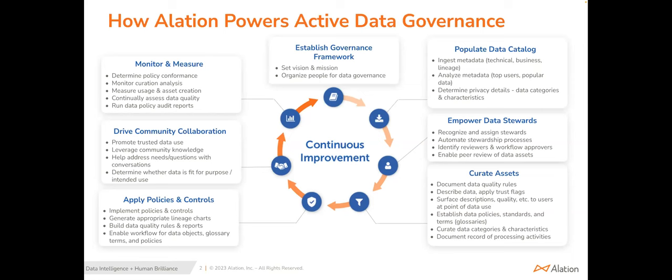The next stage is all about engagement with your data community. The people pillar of data governance isn't just about stewards and the governance office — it's about building a data community that will contribute knowledge to your catalog. You need to teach people how to find the data they need, show them how to verify the data's fit for their purpose, and encourage them to collaborate with peers via the catalog. Community engagement is also a great opportunity to find the next core use case for your program.